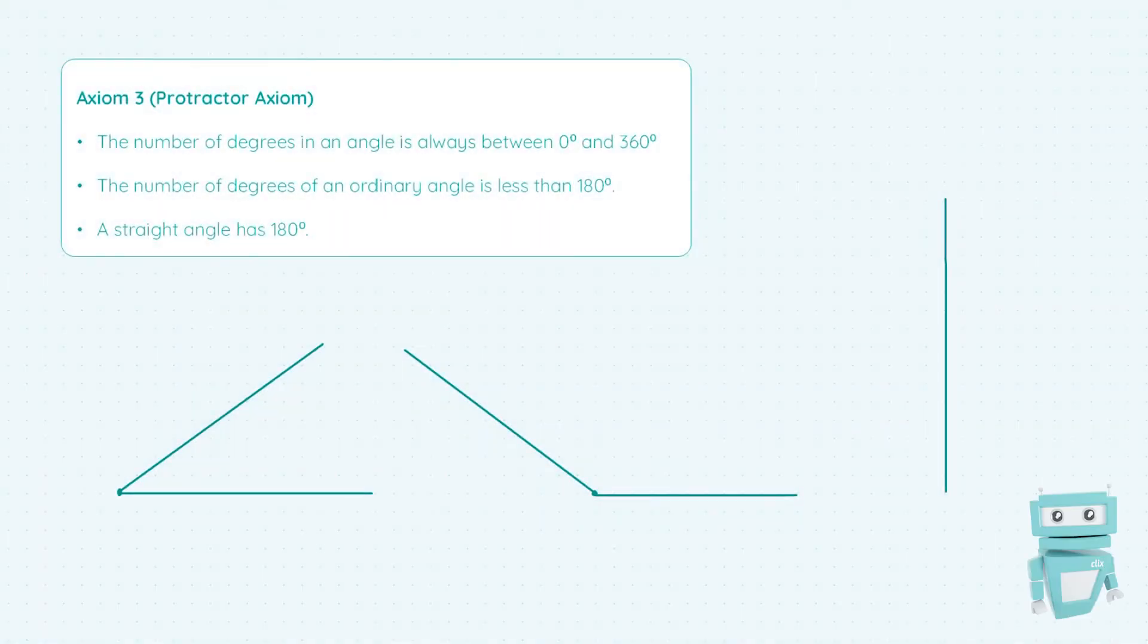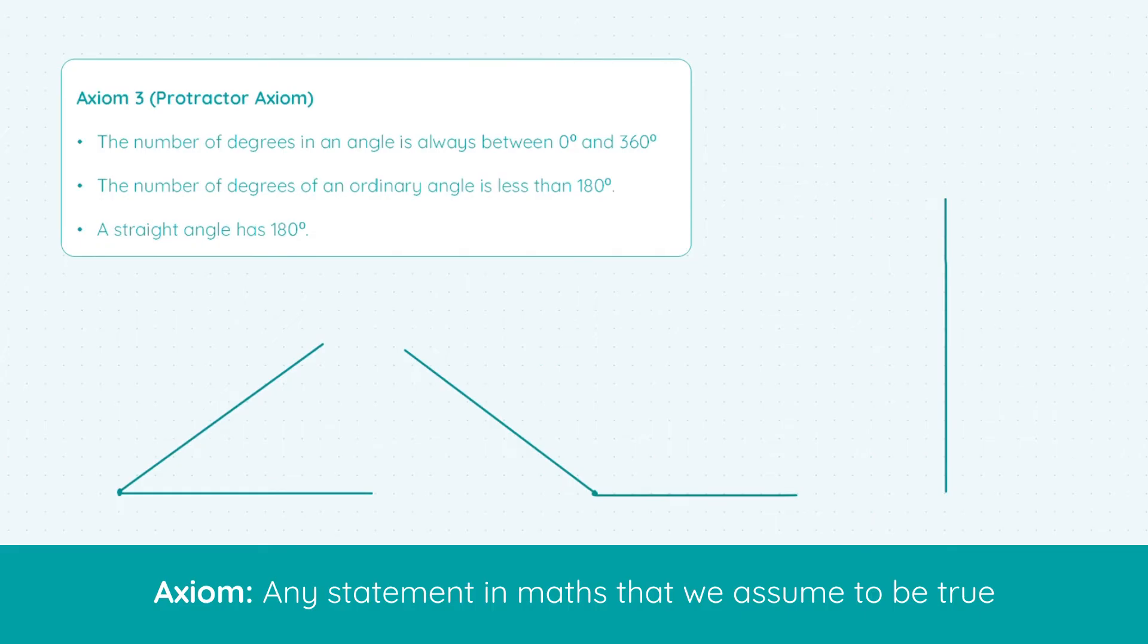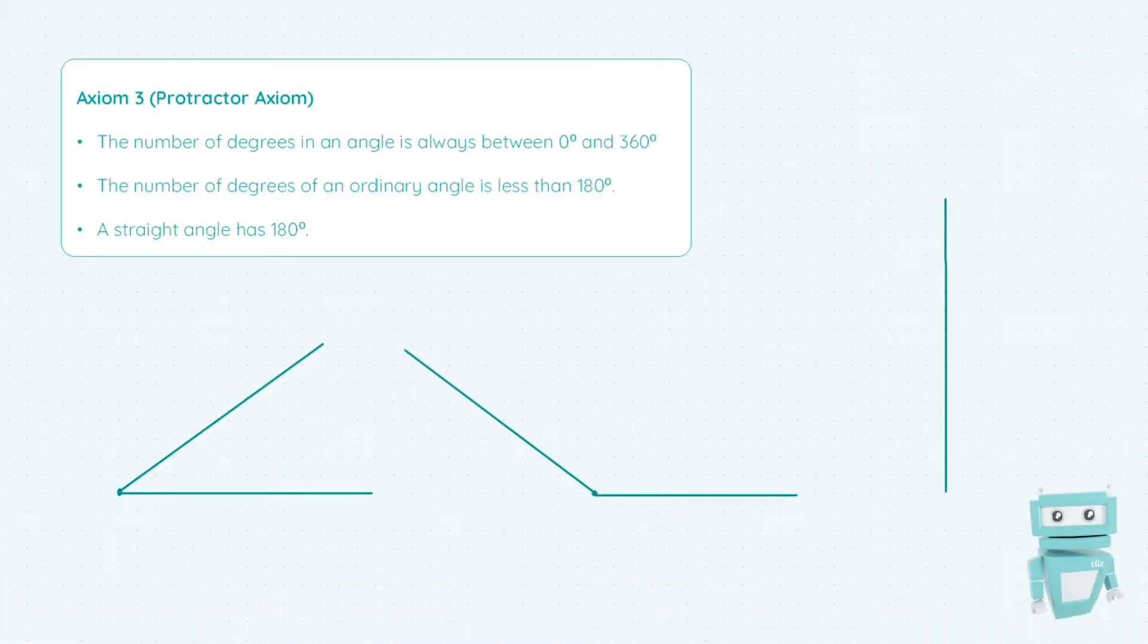Just to remind you what an axiom is, it's just an assumption you make in maths. It doesn't have to be proven or anything, it's just something we put forward because it's logical. We can break down this axiom into three points.